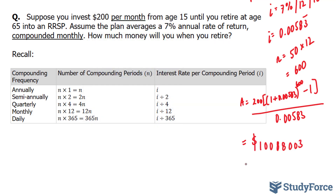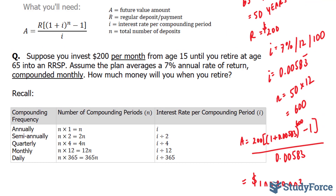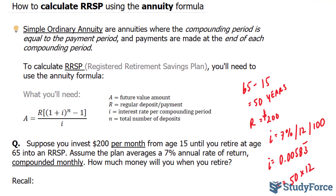That's not too bad. So essentially, by the age of 65 you will have acquired over $1,000,000 for your retirement. And so there you have it — that is how to calculate RRSP using the annuity formula.